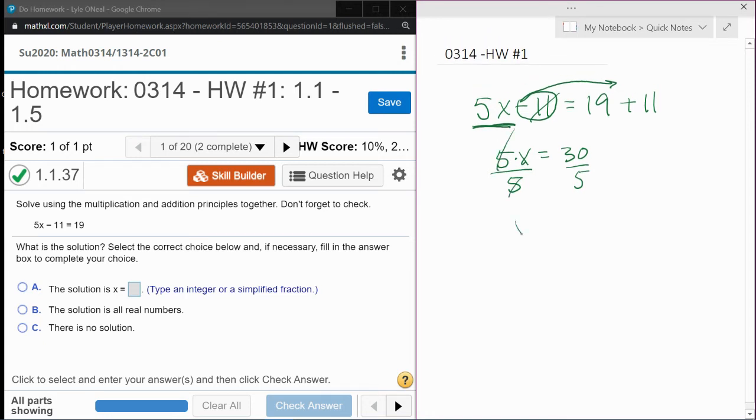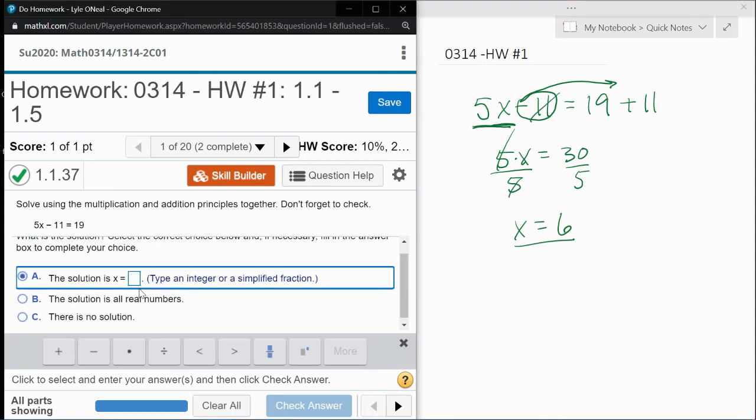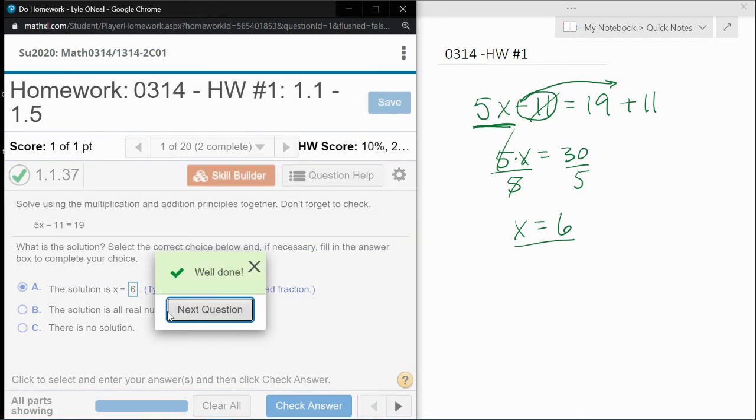So we're going to divide both sides by 5. That's going to get the 5s to cancel. 30 divided by 5 is 6. And so now if we come over to our MyLabMath, the answer is x equals 6 is correct.